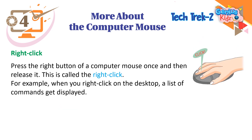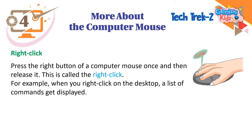Right Click. Press the right button of a computer mouse once and then release it. This is called the right click. For example, when you right click on the desktop, a list of commands gets displayed.